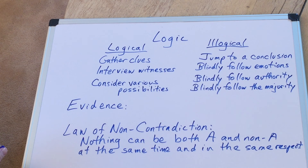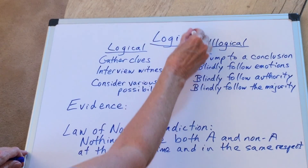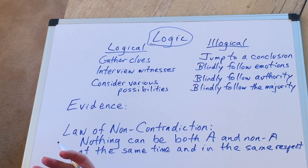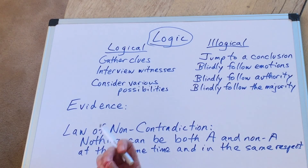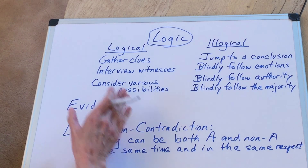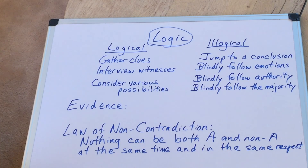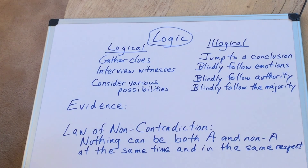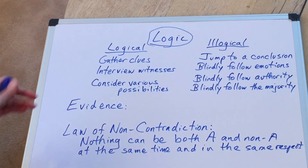So this is essentially what logic is. Logic is actually an applied science of how we need to use our minds so that we're always following the evidence, sticking to the evidence, and doing so in a way that we do not commit any contradictions. If you want to have a powerful mind, these are the two basic things you need to do.